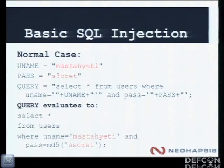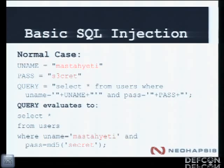Let's walk through basic SQL injection. We have some pseudo-code with the username 'maskedtheyeti' and the password 'secret'. We can imagine the query as selecting everything from the users table where the username is that username and the password is the password. So the query evaluates — and this is database agnostic — to: SELECT * FROM users WHERE username IS 'maskedtheyeti' AND password IS 'secret'.